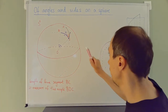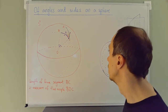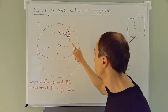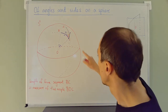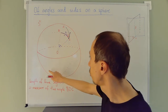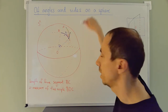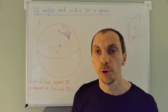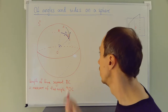Now suppose I have another side at point C — again part of some great circle. These two sides, lying on two great circles, have a certain angle between them. How do we define that angle? It's the angle between the tangent lines at C, which I'll draw as vectors. The purple vector is tangent to the great circle through BC, and the black vector is tangent to the great circle through C and some other point. I'll denote this angle at vertex C by gamma.